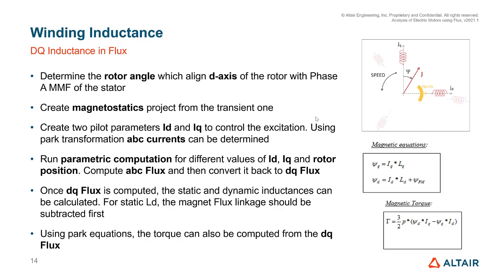Once we have the DQ flux, it's easy to compute the inductances. The static LQ is computed as ΨQ / IQ. For LD, since the D-axis includes the magnet flux linkage, we first subtract the magnet flux linkage from ΨD and then divide by ID. For dynamic (incremental) inductances, we take the derivative of the flux over the current — same process for both D and Q axes. We can also use the Park equations to compute torque from the DQ flux linkages and currents.